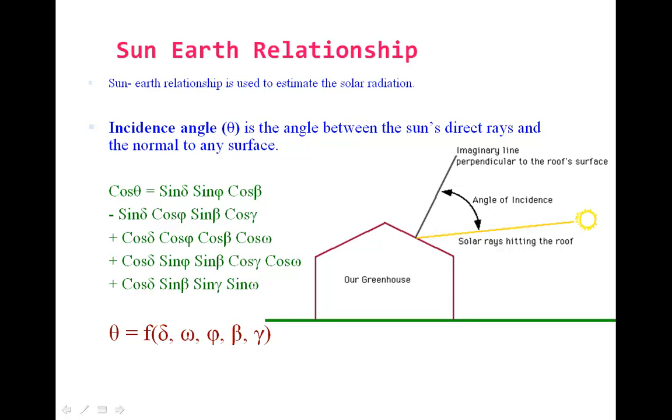Delta can be calculated from the given date. Omega, the hour angle, can be calculated from the given time, that is the watch time. Phi, that is the latitude, can be calculated from the place, the location.